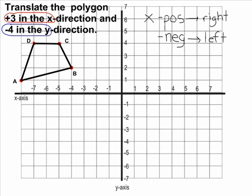it simply means moving it to the left, which would be a negative movement, or to the right, which would be a positive movement. Because it is positive 3 in this case, we are going to be moving our polygon to the right.